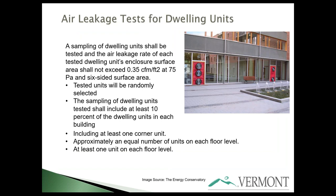Regardless of how you test your exterior air barrier, there is now also a requirement for dwelling units. In multi-family buildings or dormitories, a sample of units must be blower door tested and must meet 0.35 CFM per square foot at 75 Pascals using six-sided surface area. The contractor will not know which units are selected — testing is random. You must include at least 10% of dwelling units in each building, at least one corner unit, and approximately one unit per floor level.